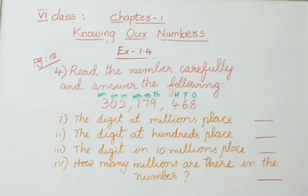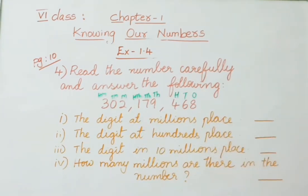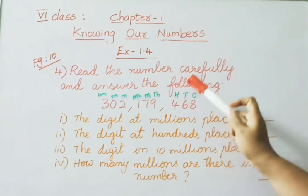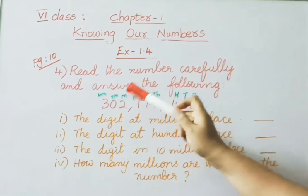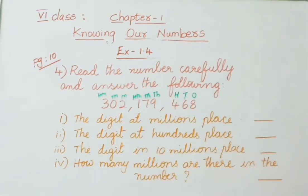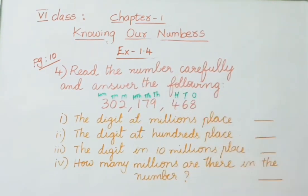The last sum in this exercise: read the number carefully and answer the questions. The number given is 302,179,468. The places are: ones, tens, hundreds, thousands, ten thousands, hundred thousands, million, ten million, hundred million. The number is 302,179,468.